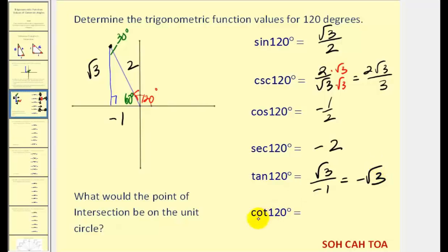The cotangent of 120 degrees is the reciprocal of the tangent: negative one over square root of three. We don't need a calculator to determine these values — we're finding exact values, whether rational or irrational.